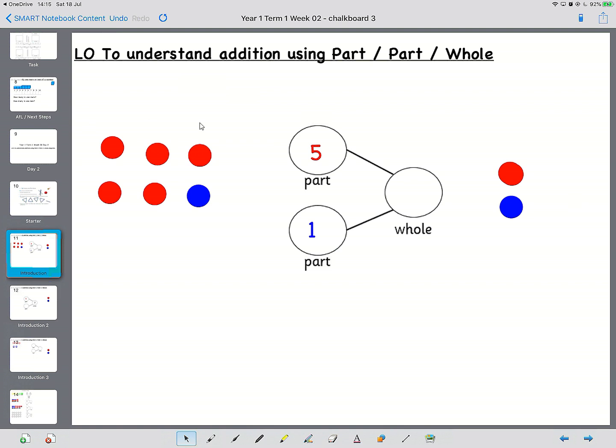So now the question is how many counters are there all together? Let's count them. One, two, three, four, five, six. So the answer is six and that basically is all you have to do with a part part whole.